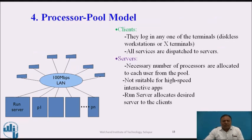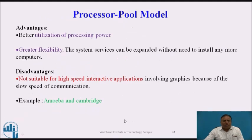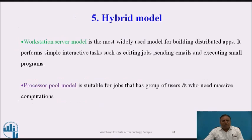The next model is the processor pool model. Here, diskless workstations are connected with a number of processors through a communication network. Clients log in to any one terminal and all services are dispatched to servers. The necessary number of processors are allocated to each user from the pool. It is not suitable for high-interaction applications. A run server decides which processor is allocated to which client. The advantage is greater utilization of processing power and flexibility without needing to install a dedicated computer. The disadvantage is its inability to handle high-speed interactive applications. Amoeba and Cambridge are examples of this model.